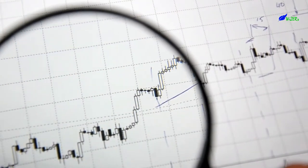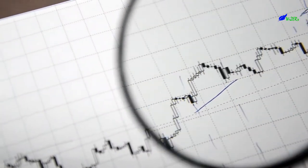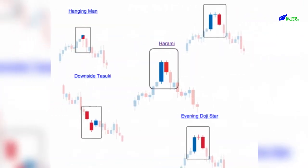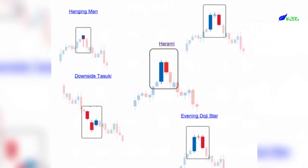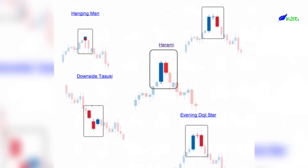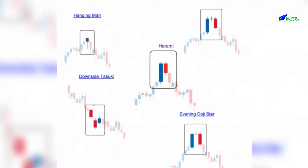Homa made huge contributions to early candlestick charting. Remember, we are still in 18th century Japan here. Munyuhisa needed a way to link the chart patterns to some visual concept — the tug of war between buyers and sellers in the market.